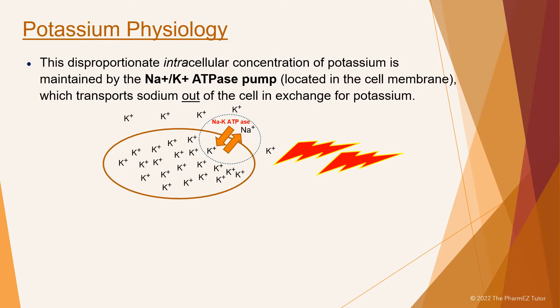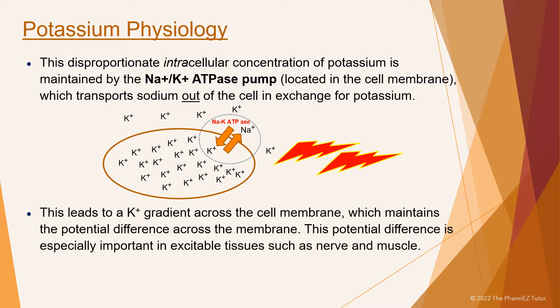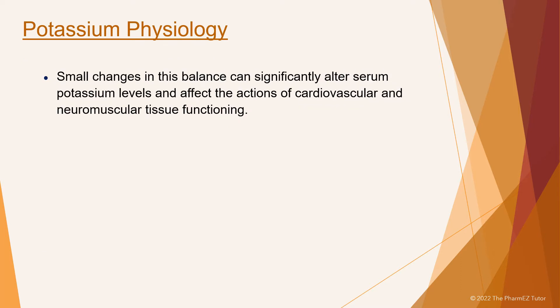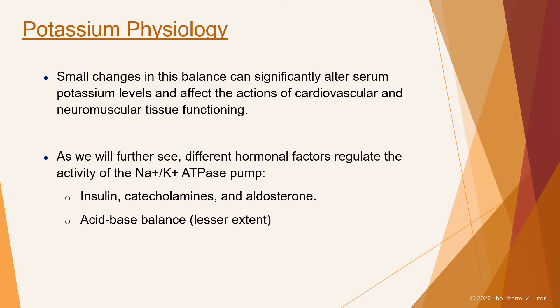This disproportionate intracellular concentration of potassium is maintained by the sodium-potassium ATPase pump located in the cell membrane, which transports sodium out of the cell in exchange for potassium. This leads to a potassium gradient across the cell membrane, which maintains the potential difference across the membrane. This potential difference is especially important in excitable tissues such as nerve and muscle. Small changes in this balance can significantly alter serum potassium levels and affect cardiovascular and neuromuscular tissue functioning. Different hormonal factors regulate the activity of the sodium-potassium ATPase pump, namely insulin, catecholamines, and aldosterone, and to a lesser extent acid-base balance.